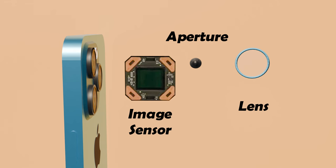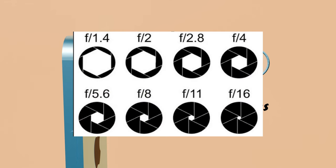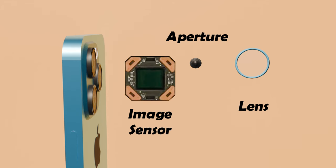A wider aperture lets in more light, which is great for low light conditions, while a narrower aperture is ideal for bright environments. The image sensor is a crucial component that converts light into an electrical signal, creating a digital image.